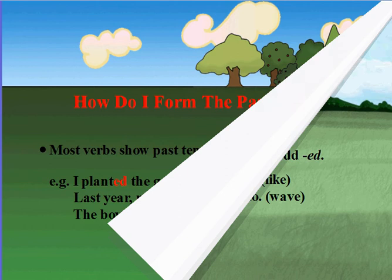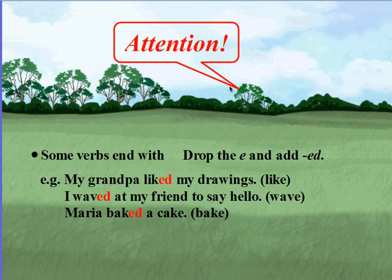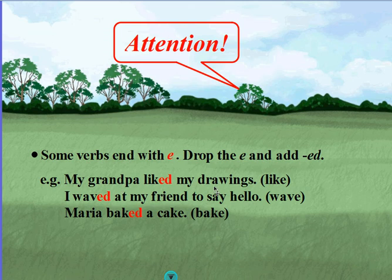Now, pay attention to something, guys. Some verbs end with the letter e — drop the e and add -ed to form the simple past. Example: my grandpa liked my drawings. The base verb is like and it ends with a silent e, so we drop the e and add -ed to show that it happened in the past.